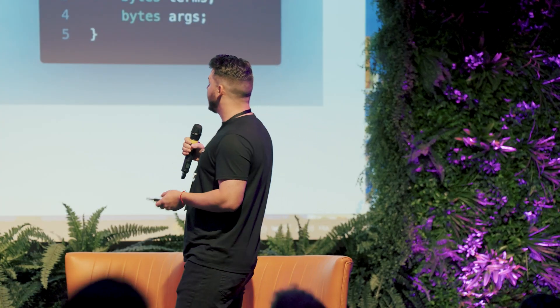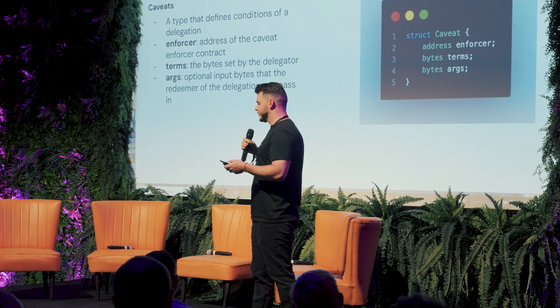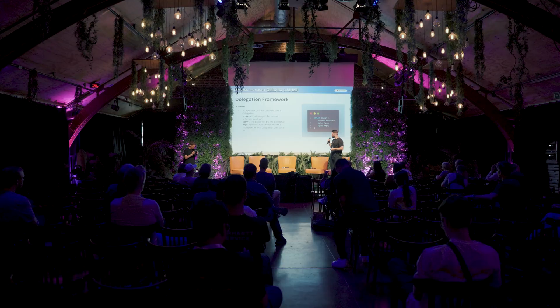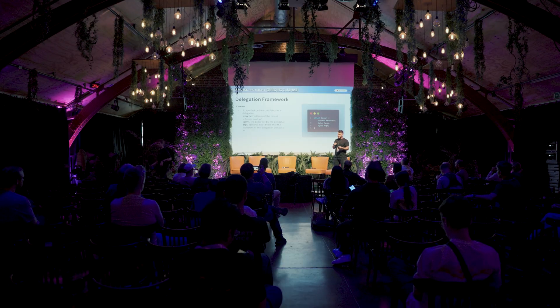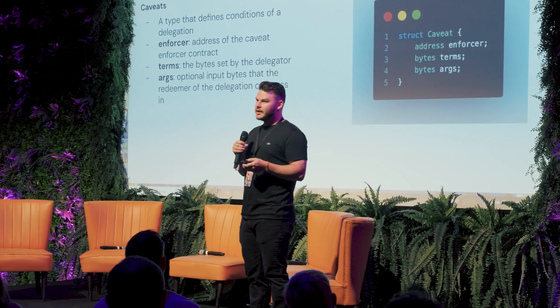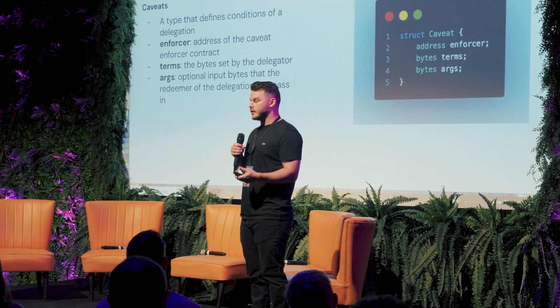Caveats are just contracts, and as long as they implement the iCaveat enforcer, they're compatible and you can do all sorts of stuff. The enforcer is just the address of the caveat enforcer, and the terms are the instructions passed in by the delegator to inform the caveat enforcer of what to enforce and what action to take. The args are this optional input from the redeemer — whoever is redeeming that delegation and trying to perform that action can pass in args, and caveat enforcers can enforce them if they choose to.